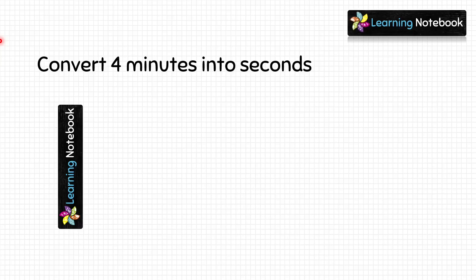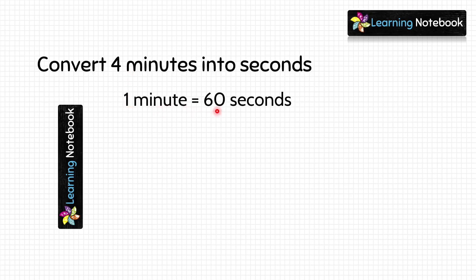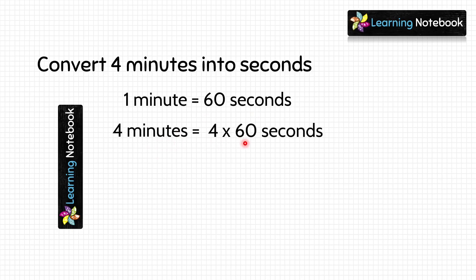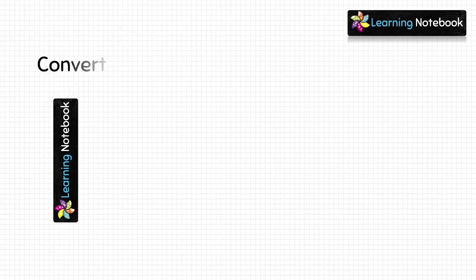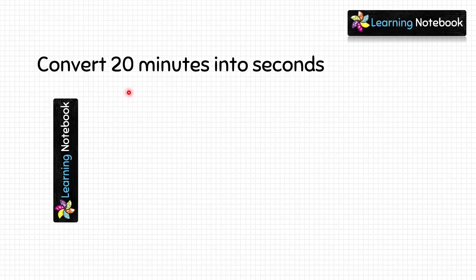The question is: convert 4 minutes into seconds. We have to convert 4 minutes into seconds. We just learned that one minute equals 60 seconds, therefore 4 minutes would be equal to 4 multiplied by 60 seconds. 4 into 60 equals 240, so the answer is 240 seconds.